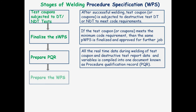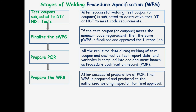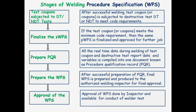Next is to prepare the final WPS. After successful preparation of the PQR, the final WPS is prepared and submitted to the authorized welding inspector for final approval. Finally, the approval of the WPS is done by the inspector, and it is then available for conduct of welder tests.